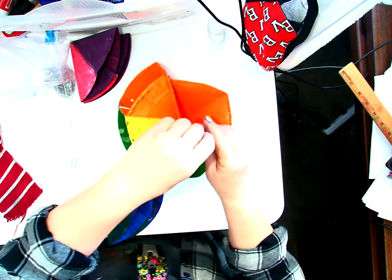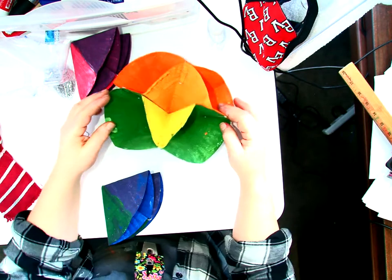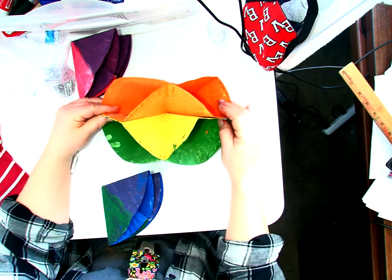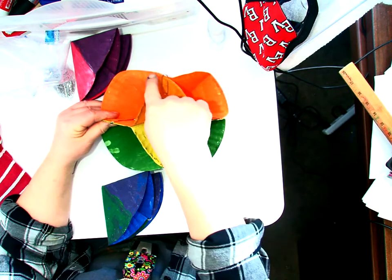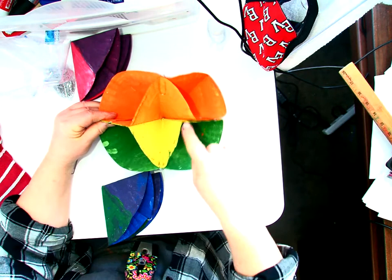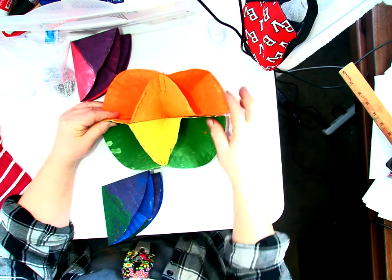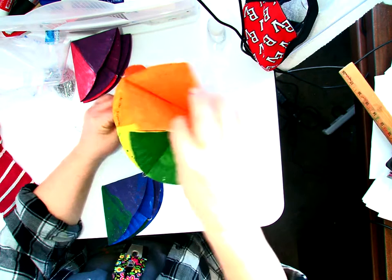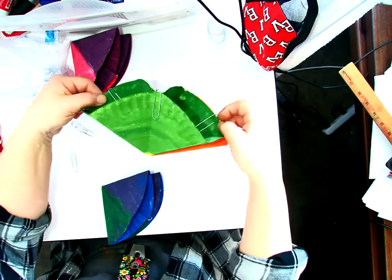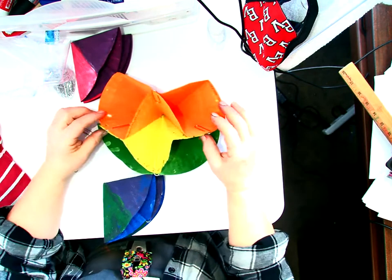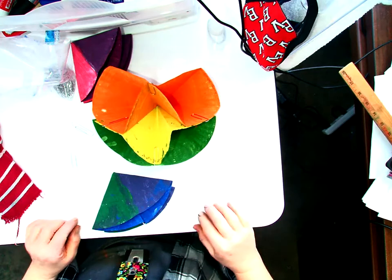Now once I have done that, you'll notice there is like this V shape right here in the middle. We've got to keep that V shape. This is half of the color wheel. So leave that as is.